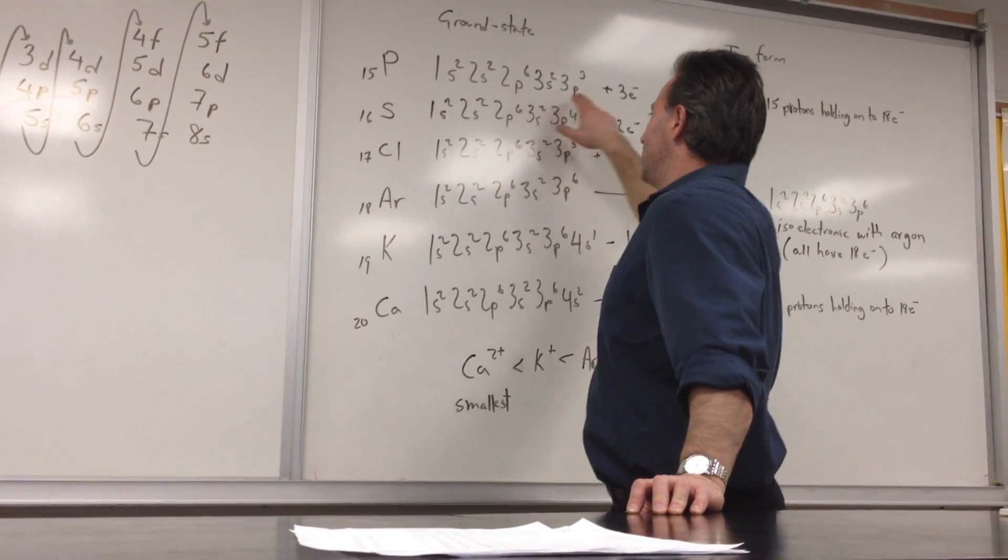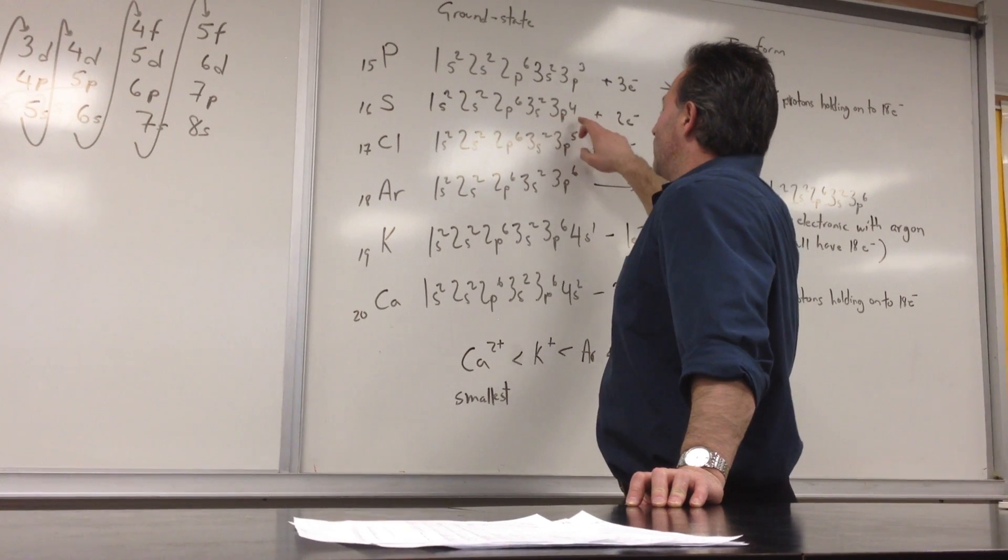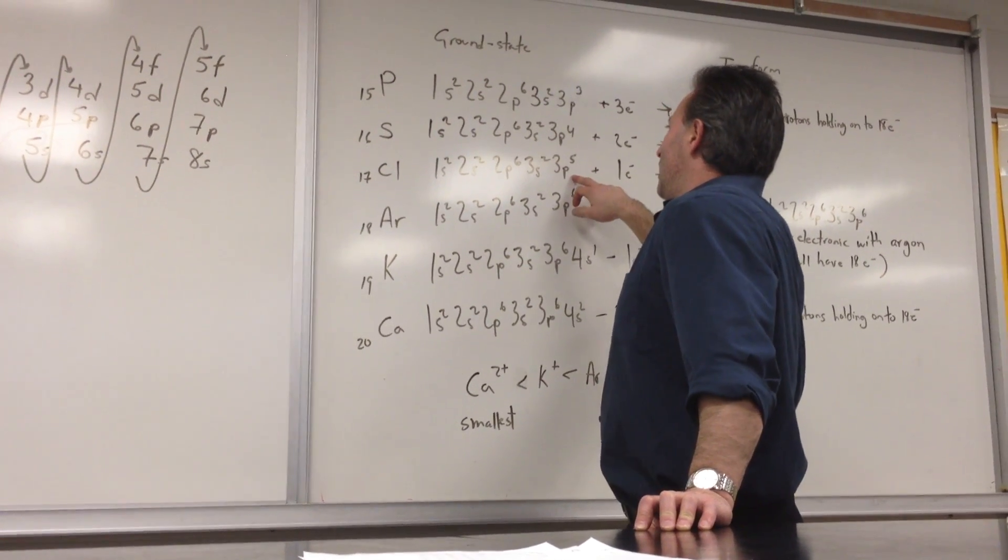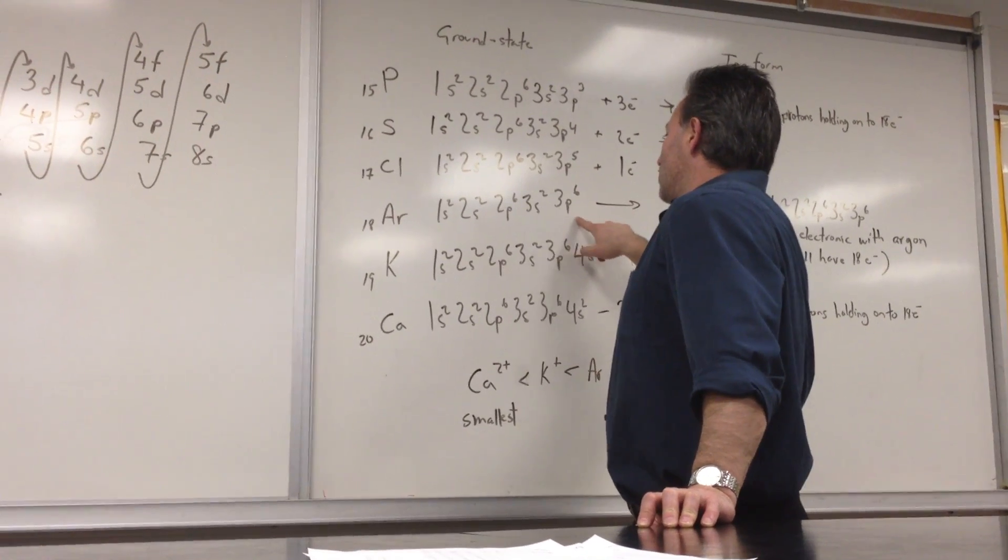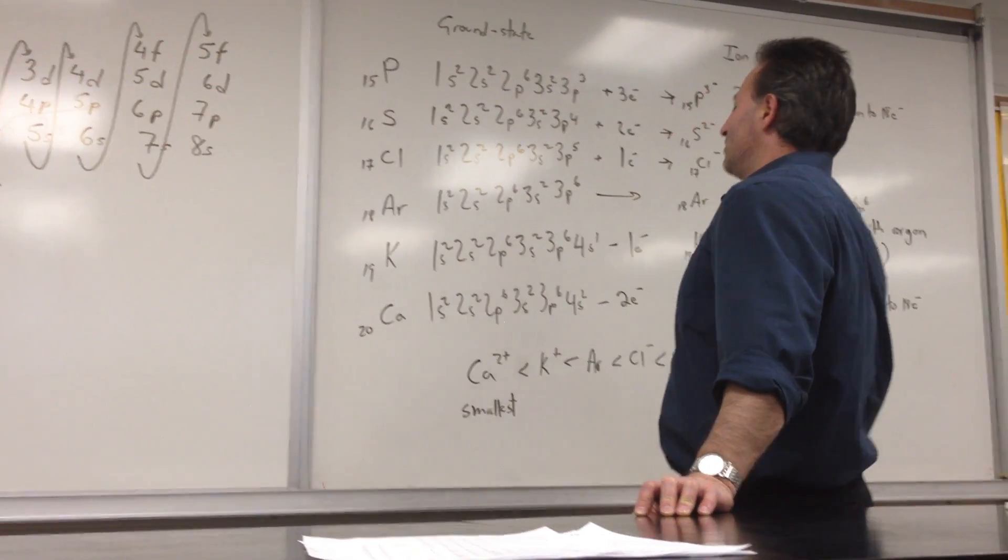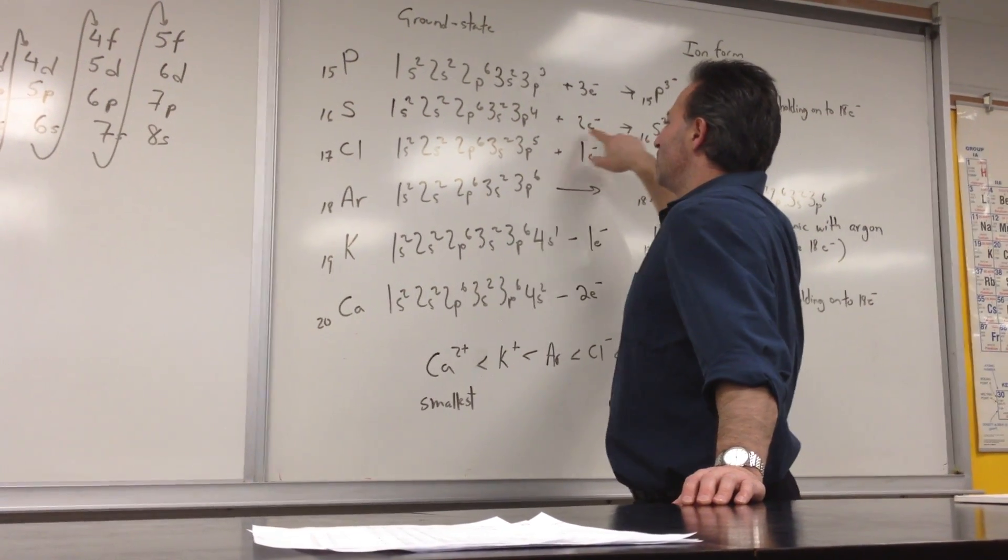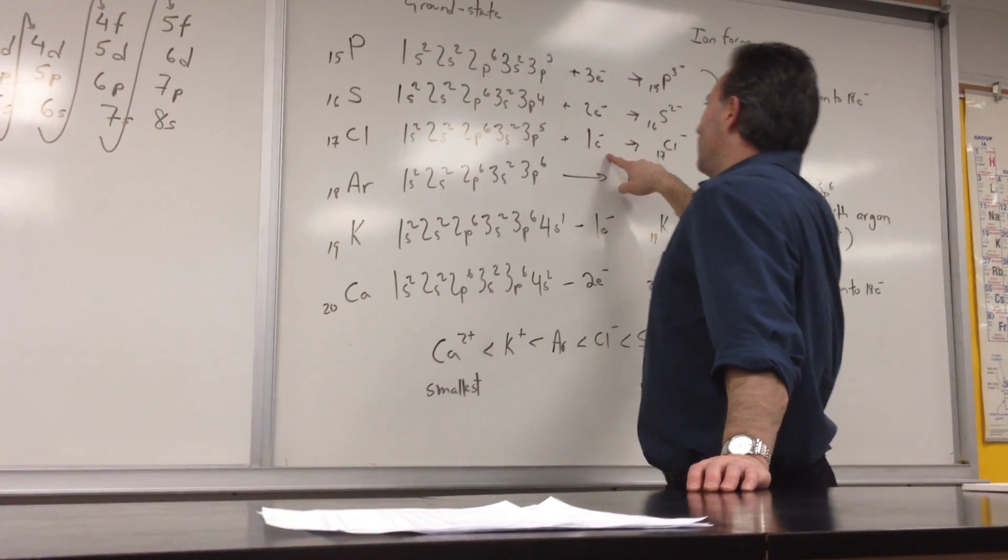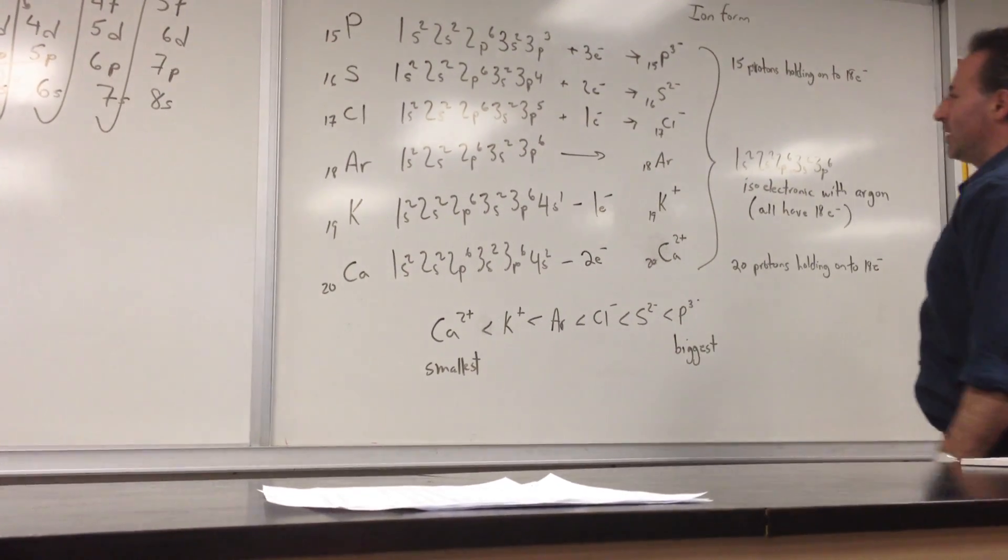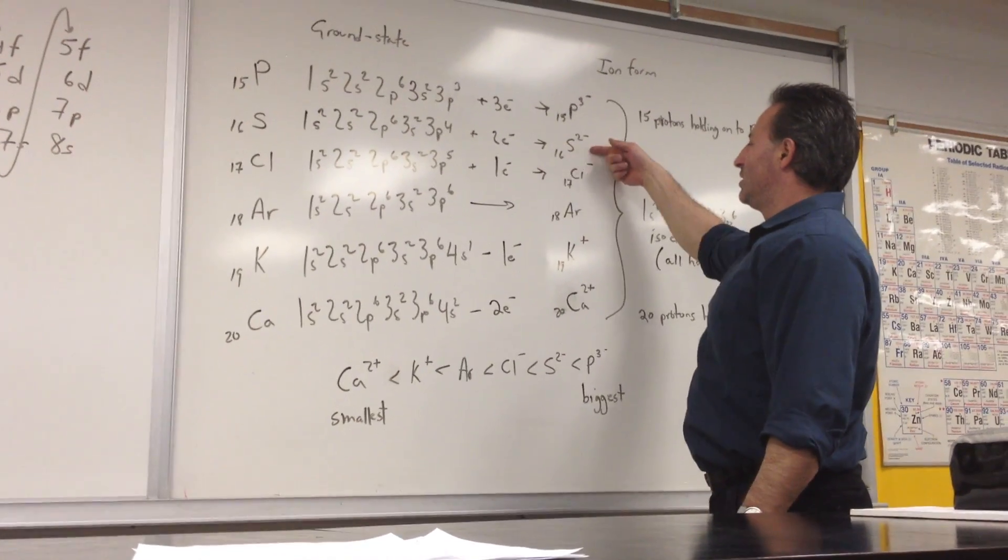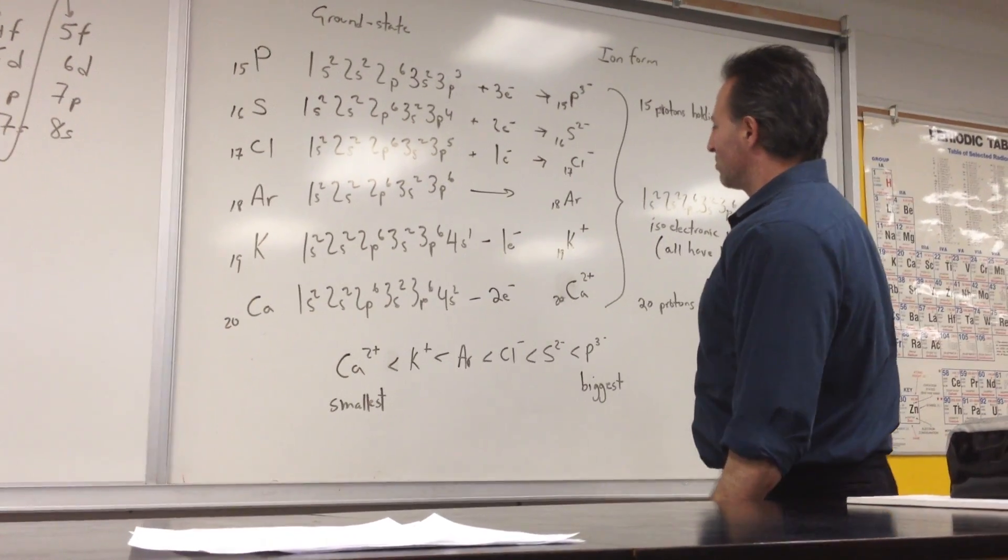We can see that phosphorus ends in P3, sulfur ends in P4, and chlorine finishes in P5. So to achieve P6, which is the stable configuration of the nearest noble gas, phosphorus needs to gain 3 electrons, sulfur needs to gain 2, and chlorine needs to gain 1. And that's exactly what happens when they form ions. Phosphorus forms the phosphide anion, sulfur forms sulfide, and chlorine forms chloride.